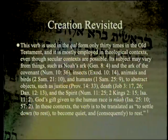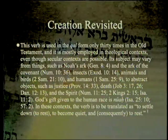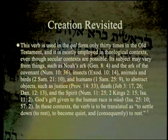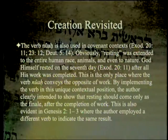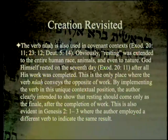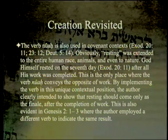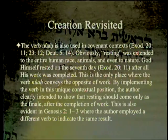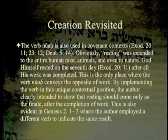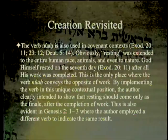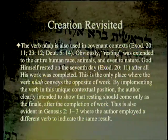God's gift given to the human race is 'nuach.' In Isaiah 25:10 and 57:2, the verb is to be translated as 'to settle down,' 'to rest,' 'to become quiet,' and consequently 'to rest.' The verb 'nuach' is also used in covenant contexts. God himself rested on the seventh day after all his work was completed. This is the only place where the verb 'nuach' conveys the opposite of work, clearly intending to show that resting should come only as the finale, after the completion of work.